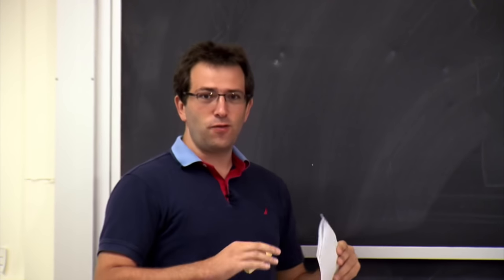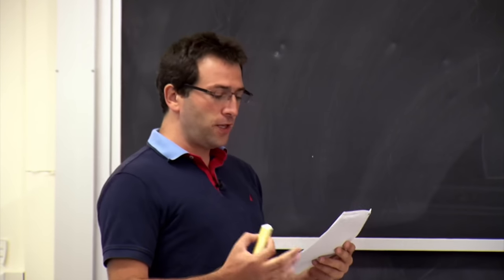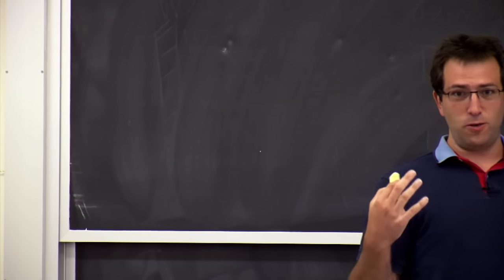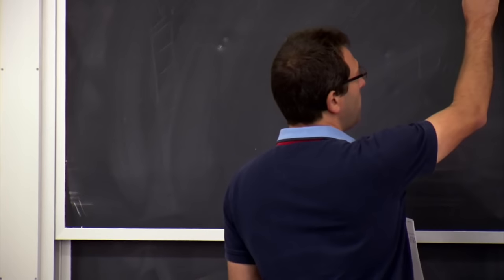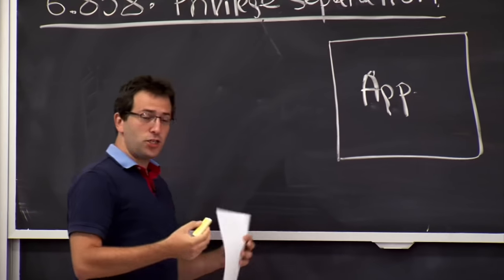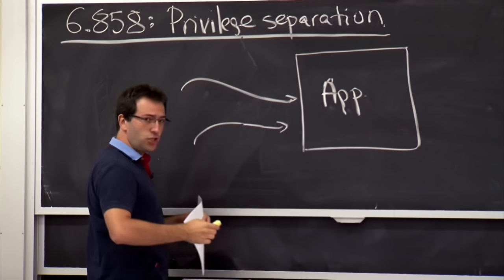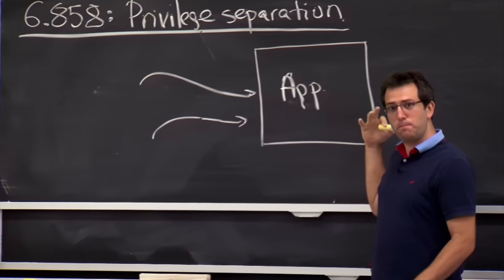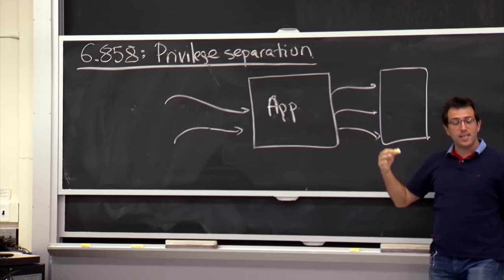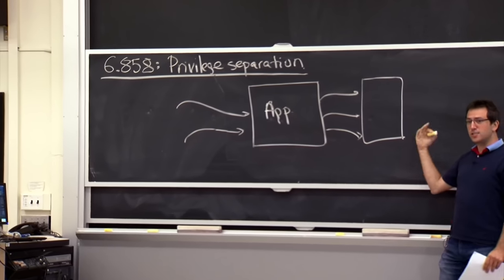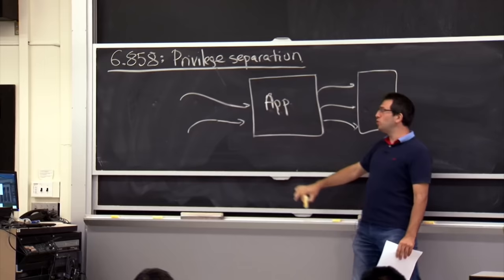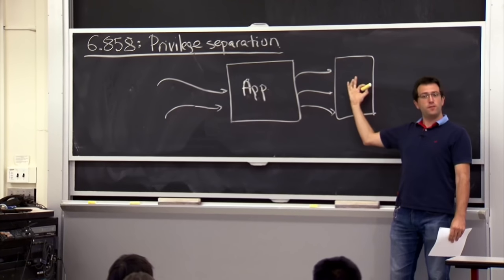Before we dive into the details of OKWS and Unix permissions, let's see what privilege separation is and why it's such a good idea. In last week's lectures, James showed you that if you write a program in C, it's almost inevitable you'll have something bad go wrong. The problem is that if you have a large application and there's any kind of vulnerability, then adversaries that can connect and send requests to it might be able to trick it into doing bad things.